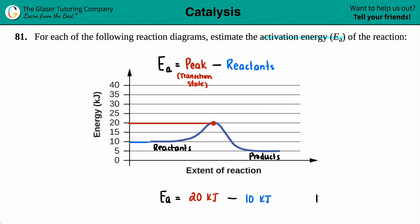So in this case we just got to do simple math, right? 20 minus 10, we have an activation energy of 10 kilojoules.